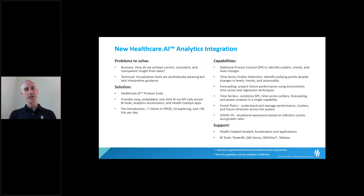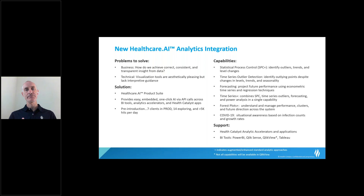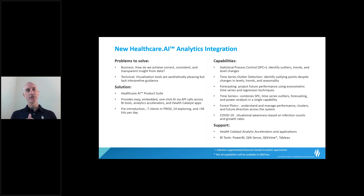The capabilities available include statistical process control, time series outlier and anomaly detection, forecasting, forest plots, and COVID-19 specific calls and services. All of these are available through the most common BI tools — Power BI, Qlik Sense, and Tableau — and also through Health Catalyst tools like analytic accelerators. Where you see a plus symbol next to something like SPC+ or time series+, it means we've provided basic functionality, in the case of SPC around for 100 years, but have taken steps to make it much easier to use and augmented with additional capabilities.